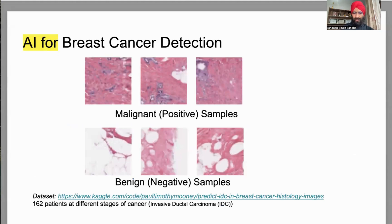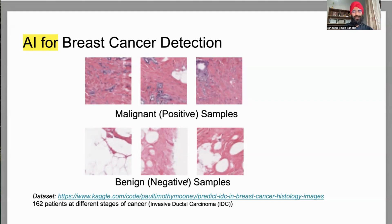Here I have taken a real cancer dataset from 162 patients at different stages of cancer — this is a breast cancer dataset with images of real breast cancer tissue. The top three images are from patients who have cancer, and the bottom three are normal images — those patients don't have cancer. Malignant means it's a positive, cancerous sample. Benign means it's a negative, non-cancer sample. Given these images, we want an AI to learn whether it's cancer or not.